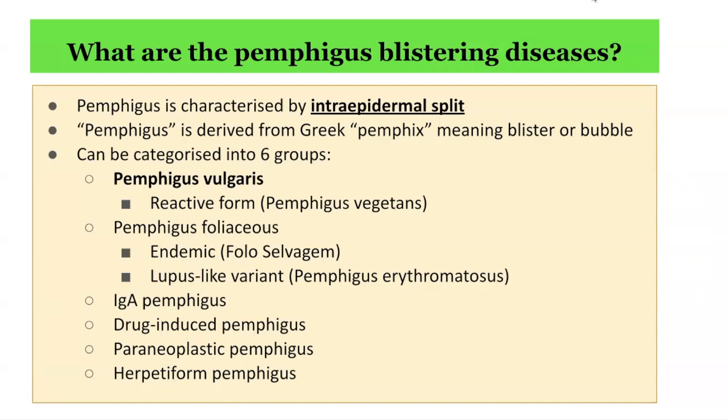The six groups are: Pemphigus vulgaris, Pemphigus foliaceus, IgA pemphigus, drug-induced pemphigus, paraneoplastic pemphigus, and herpetiform pemphigus. Today's presentation is focused on Pemphigus vulgaris. There is a reactive variant form known as Pemphigus vegetans.